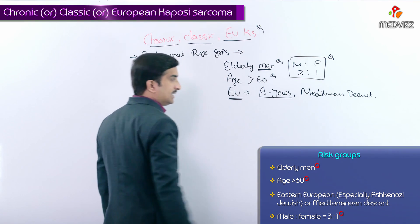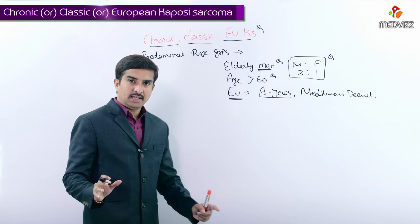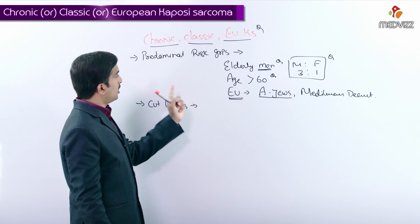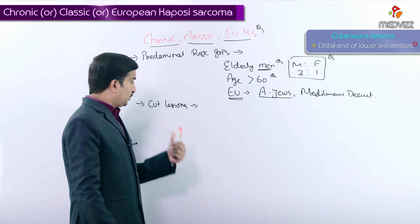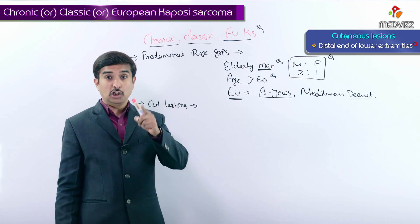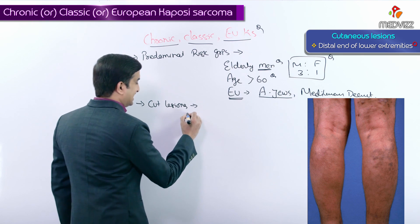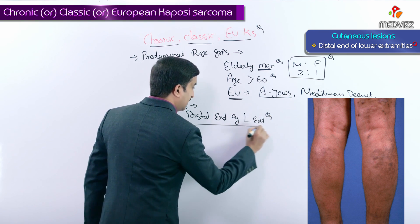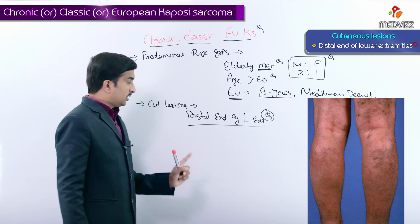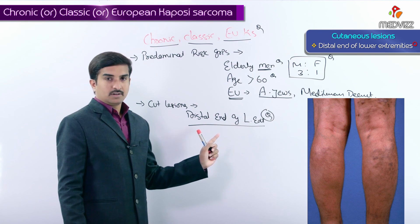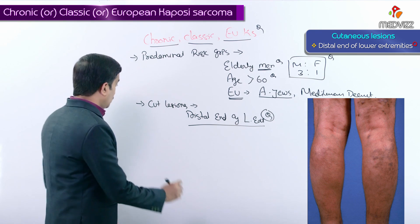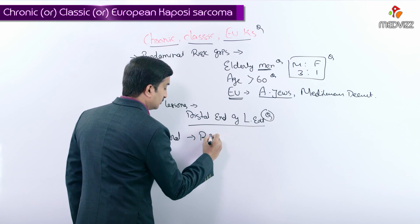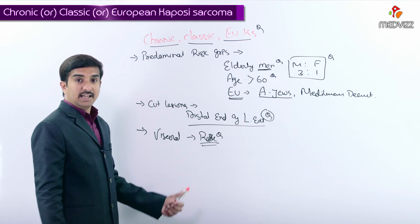The cutaneous lesions of classic or European Kaposi sarcoma are located at the distal end of the lower extremities, as seen in the picture. This is a very important MCQ point — the most common cutaneous lesion sites are the distal end of the lower extremities. Visceral involvement is rare in the European type — another MCQ question.